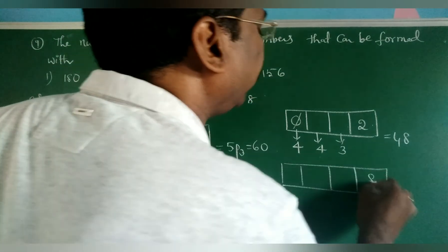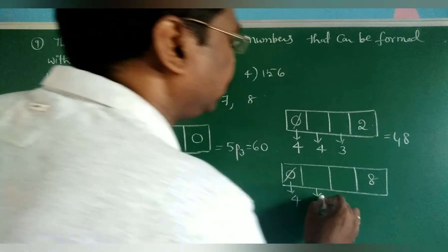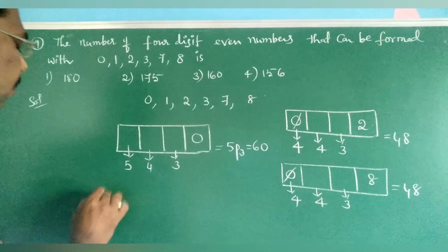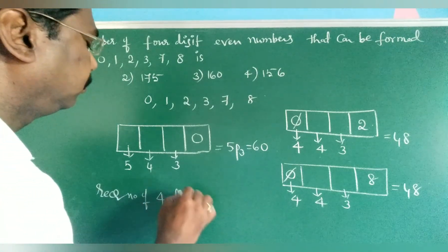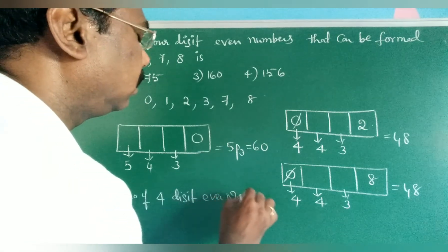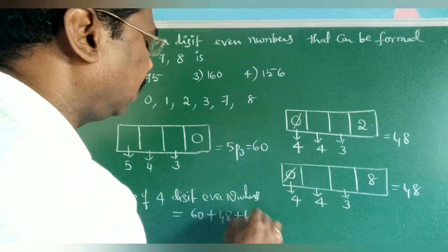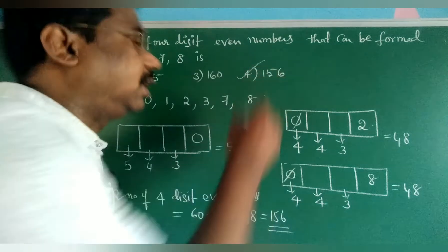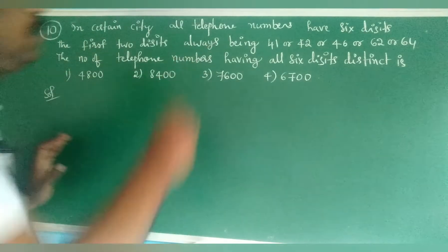Case 3: unit place filled with 8. Similarly, first place (excluding 0): 4 ways, second place (including 0): 4 ways, third: 3 ways — also 48. Therefore the required number of 4-digit even numbers = 60 + 48 + 48 = 156. The 4th option is the correct one.